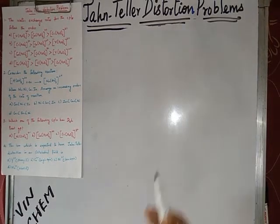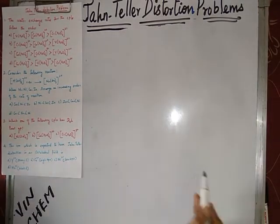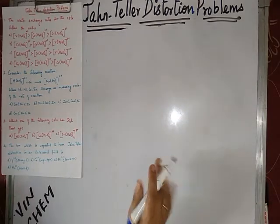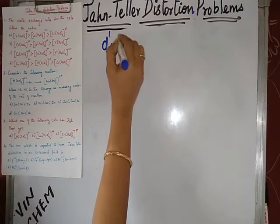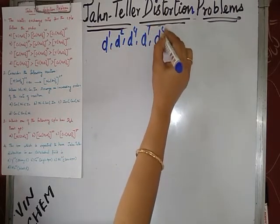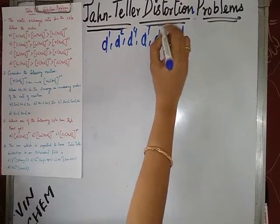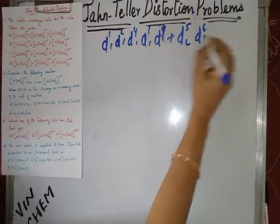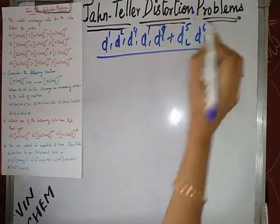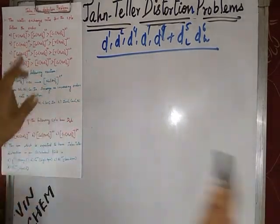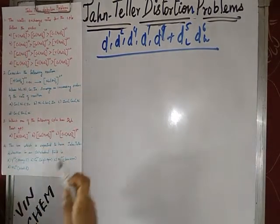Hi guys, today we are going to see some Jahn-Teller distortion problems. In an earlier video I explained what Jahn-Teller distortion is and the related tricks — that is d1, d2, d4, d7, d9, and also d5 low spin and d6 high spin are having Jahn-Teller distortion. That was the tip I gave in the last video. If you have any doubts, go through that video. Now we are going to solve some problems related to that.